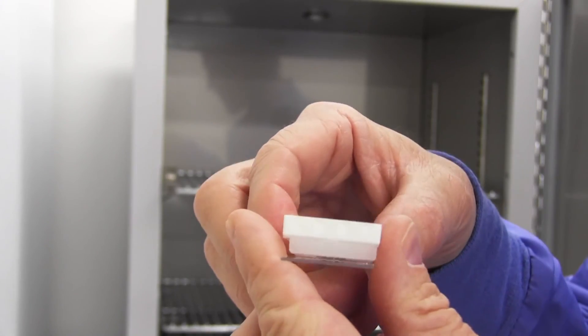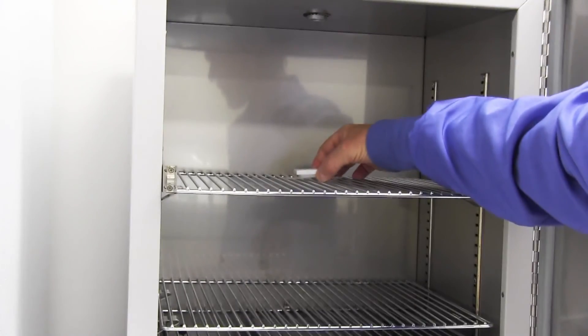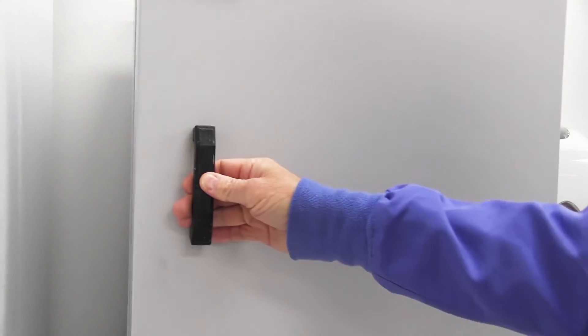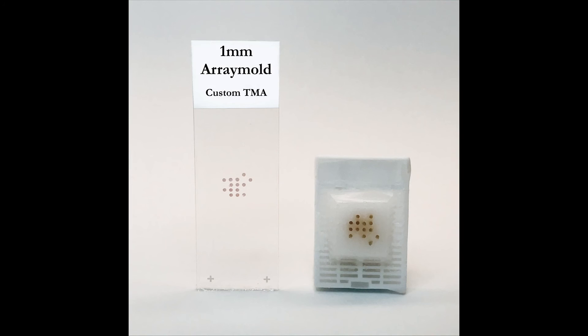Once you have filled the holes with tissue and paraffin you will need to set your punches. Setting a TMA block is covered in several of our videos including our up and running TMA video.